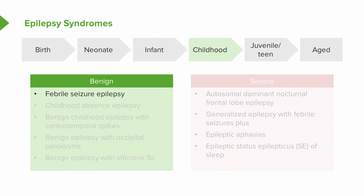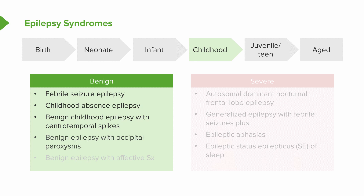Moving forward to the childhood age range, benign seizures include febrile seizures, childhood absence epilepsy, benign childhood epilepsy with centrotemporal spikes, benign epilepsy with occipital paroxysms, and benign epilepsy with affective symptoms. In many of these seizure conditions, patients may outgrow them. They may require seizure treatment initially and then require less treatment or no treatment down the road.